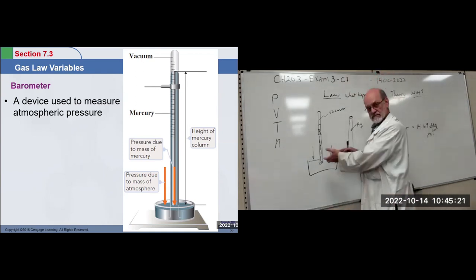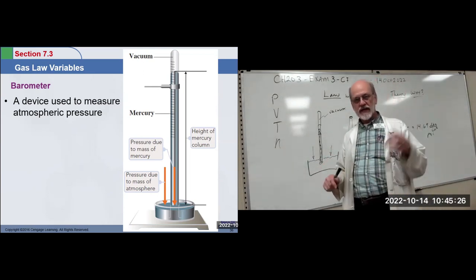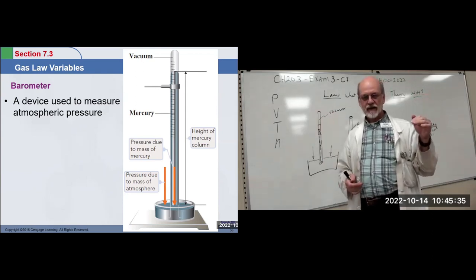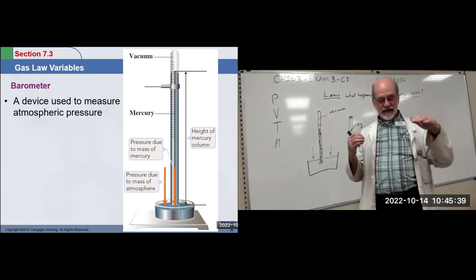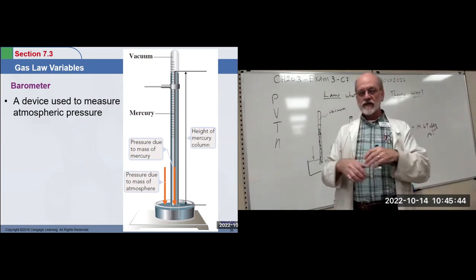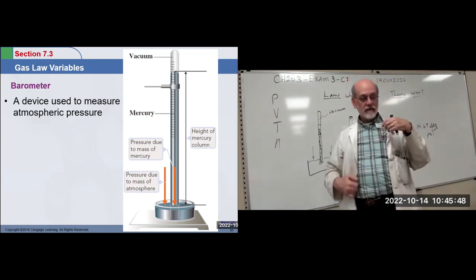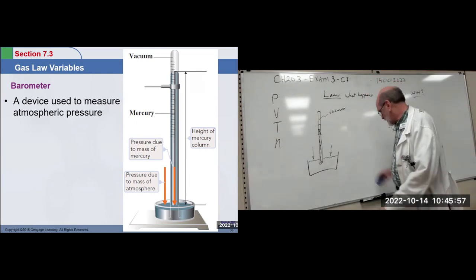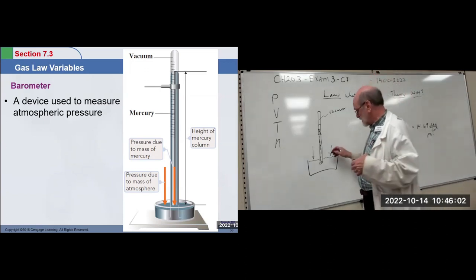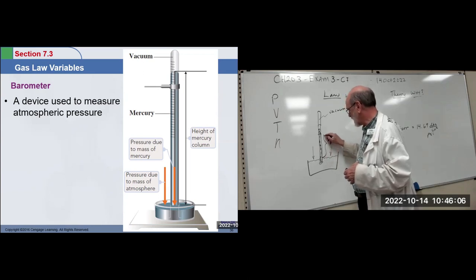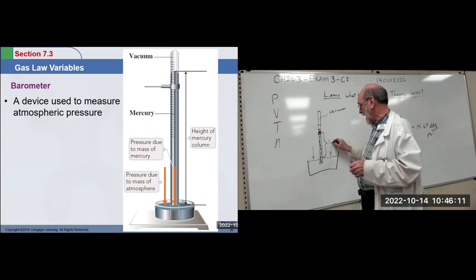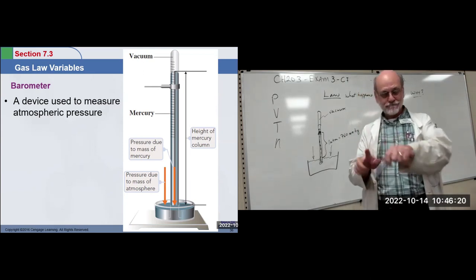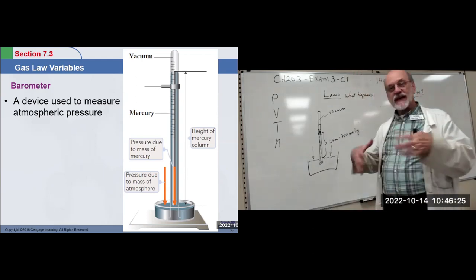He and other scientists took their barometers, set them on their desks, and watched them day after day. They noticed the level went up and down and correlated that movement with weather — when the weather was turning bad, the level went down, and after the bad weather passed, the level went back up. We still do that today: low pressure means bad weather, high pressure means good weather. This is where millimeters of mercury comes in — the distance in the tube at one atmosphere at sea level should be 760 millimeters high, and that was set as one atmosphere pressure.